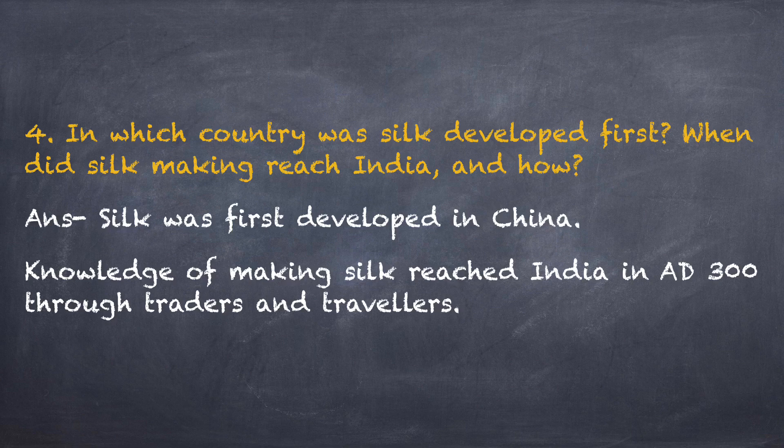Question 4: In which country was silk developed first? When did silk making reach India and how? Answer: Silk was first developed in China. Knowledge of making silk reached India in AD 300 through traders and travelers.